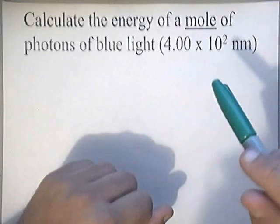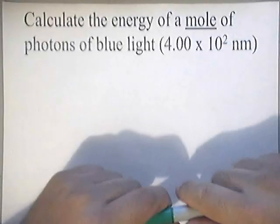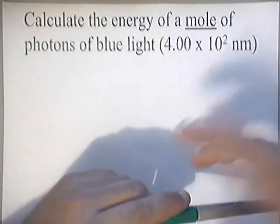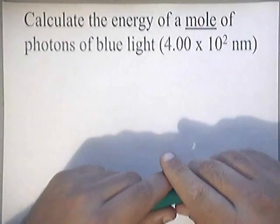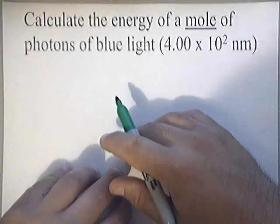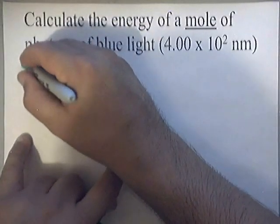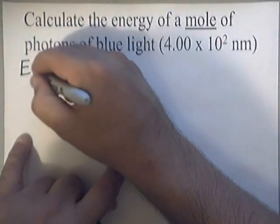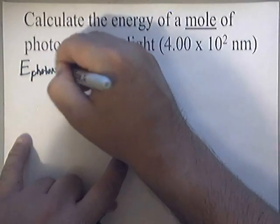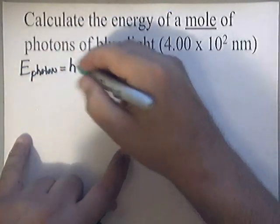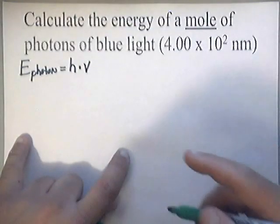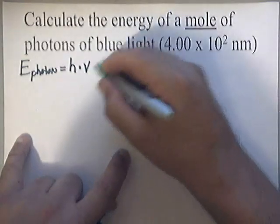In this calculation we're going to be using two different equations. We're going to be using Planck's constant in one equation where we have the energy of a photon equals Planck's constant times V, which is frequency of the photon. So we have energy of a photon, that's energy per photon, equals H, which is Planck's constant, times V, which is the frequency of a photon.